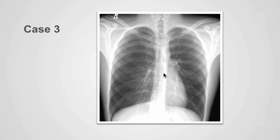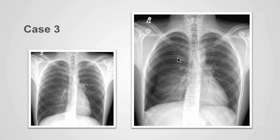Can you identify the pneumothorax on this case? Pause the video and take a look. In this case, we can identify a linear density extending superiorly, which represents the edge of the lung — this is the pneumothorax. The expiration view exaggerates the appearance of the pneumothorax on the right.